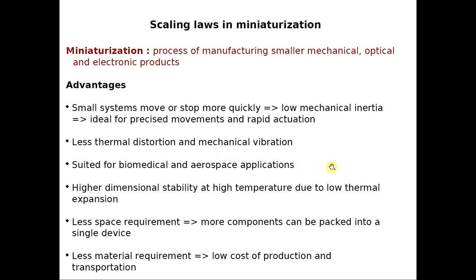Even temperature variations — once a satellite reaches into space, temperature variations go like anything. All those nano-size materials will be able to withstand that. There is also higher dimensional stability at high temperature due to low thermal expansion. And if you have something of very small size, it doesn't need a lot of space — less space requirement is one advantage, meaning you can have more components within a single device.